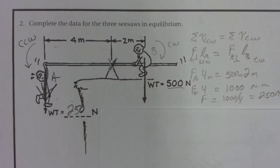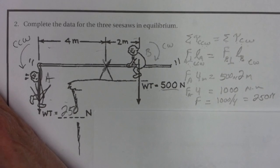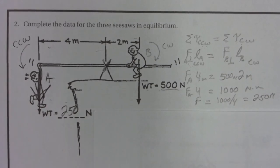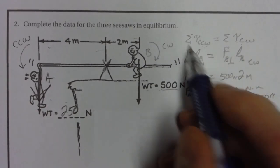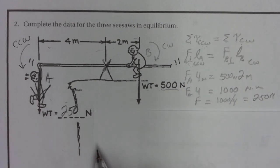So balanced torques—that's what you do. The torques rotating one direction, counterclockwise, have to equal the torques rotating the other direction, clockwise.